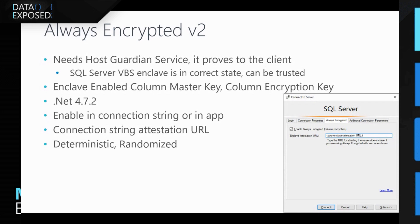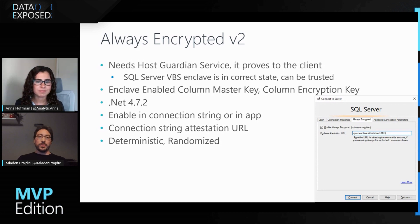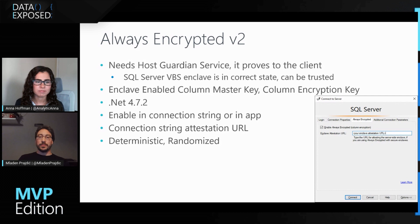This Host Guardian Service runs on a separate computer that should be administered by people not administering your domain or having anything to do with SQL Server. The way it works is you have two keys: an enclave-enabled column master key and a column encryption key. The data in your column is encrypted with the column encryption key, and the column encryption key is then encrypted with the column master key. The certificate for your column master key — the way to decrypt it — is not stored on the server. It's stored with the client or in some other secure location. You need .NET 4.7.2 for this to work.